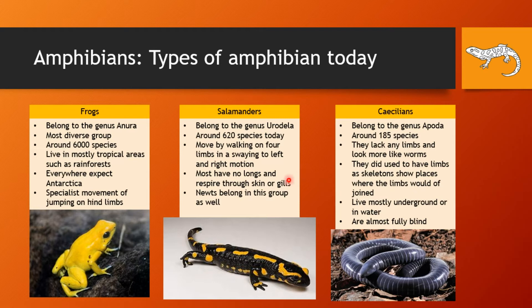The second group are the salamanders, belonging to the genus Urodela. They have around 620 species and don't have a unique movement — they usually just walk by swaying their limbs from left to right. Most have no lungs and instead respire through their skin or their gills. The newts, which are fairly common in the UK, also belong to this group.